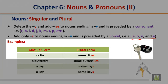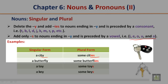Singular form: a city. Plural form: some cities. Why did you add IES? You delete the Y and add IES to nouns ending in Y preceded by a consonant. City ends in Y, and the Y is preceded by a consonant T — T is not a vowel, so you add IES. Singular form: a butterfly. Plural form: some butterflies.